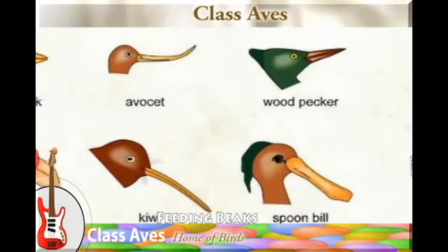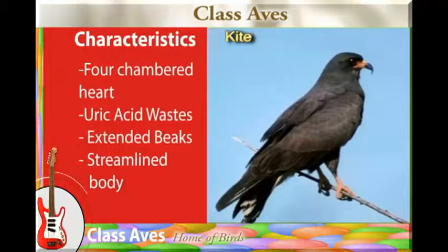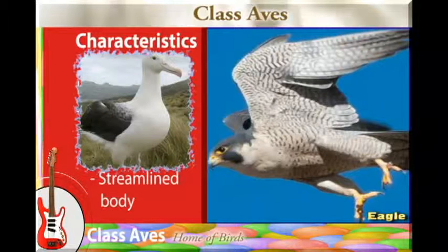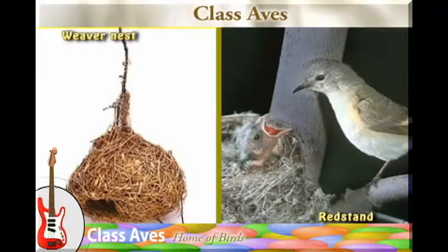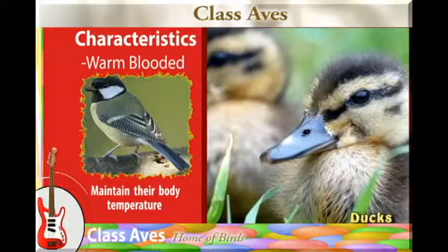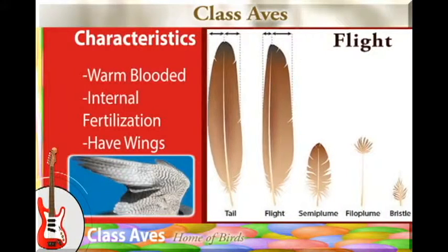Their body structure is streamlined, which helps to reduce resistance during flight. We have seen the characteristics that put all organisms in this class together, including internal fertilization, being warm-blooded, having wings, and having feathers to cover the body.